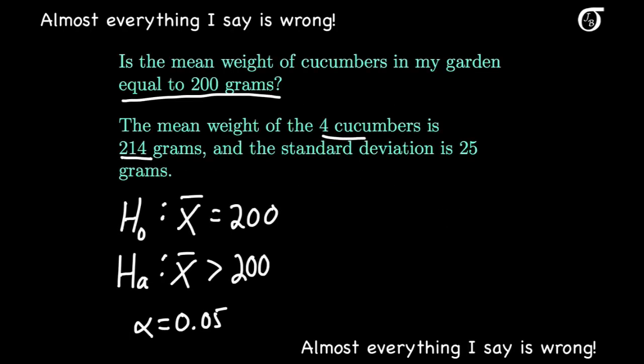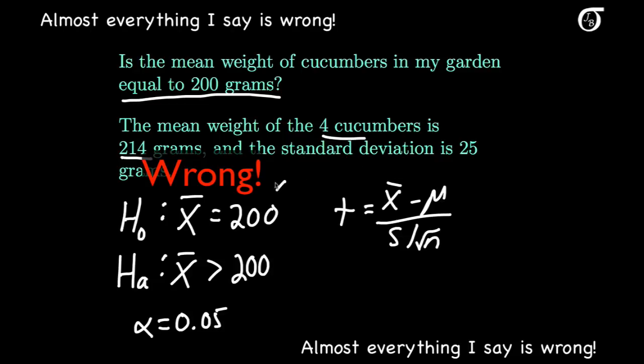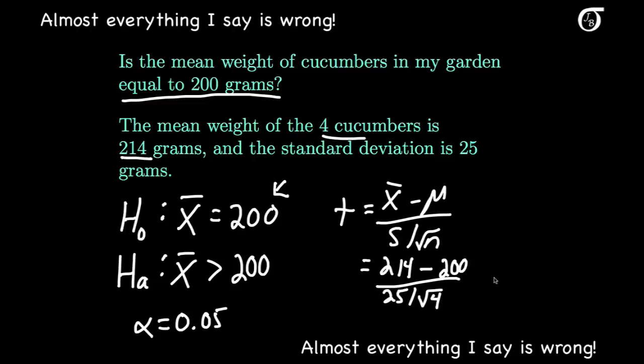Here's our example once again. The t-statistic is x-bar minus mu over s over the square root of n. Mu is the true mean weight of cucumbers in my garden, and that's simply given here in the null hypothesis. So our test statistic is the mean value from our sample, 214, minus the true value of mu, 200, over the standard deviation of 25 divided by the square root of 4. And that works out to 1.12.